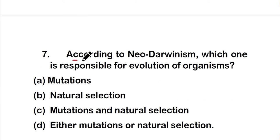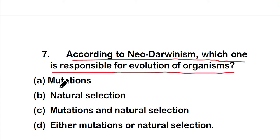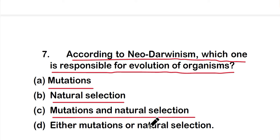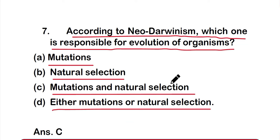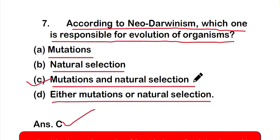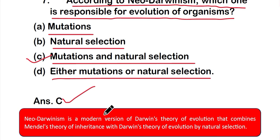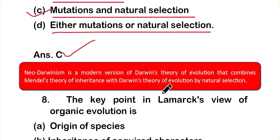Question 7: According to neo-Darwinism, which one is responsible for evolution of organisms? Option A: mutations, option B: natural selection, option C: mutations and natural selection, or option D: either mutations or natural selection. The correct answer is option C — mutations and natural selection. Neo-Darwinism is a modern version of Darwin's theory of evolution that combines Mendel's theory of inheritance with Darwin's theory of evolution by natural selection, so that genetic variation is accounted for.